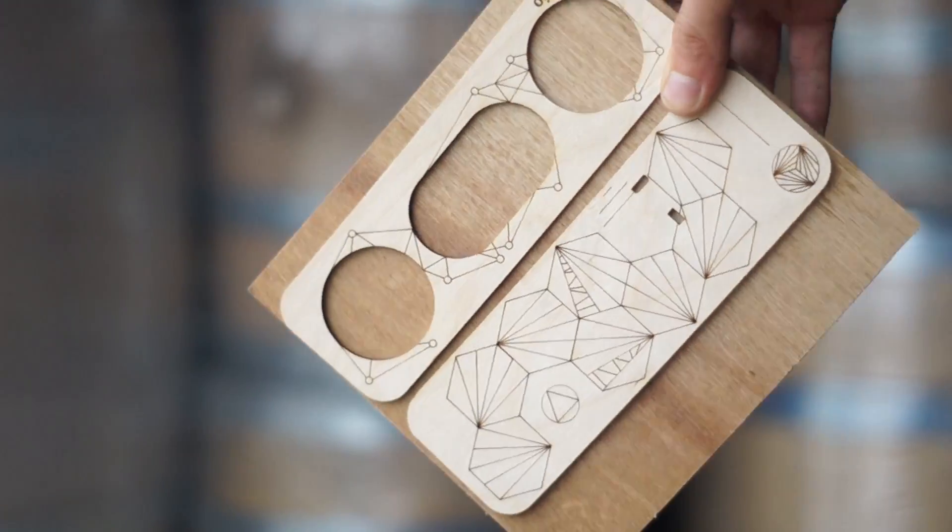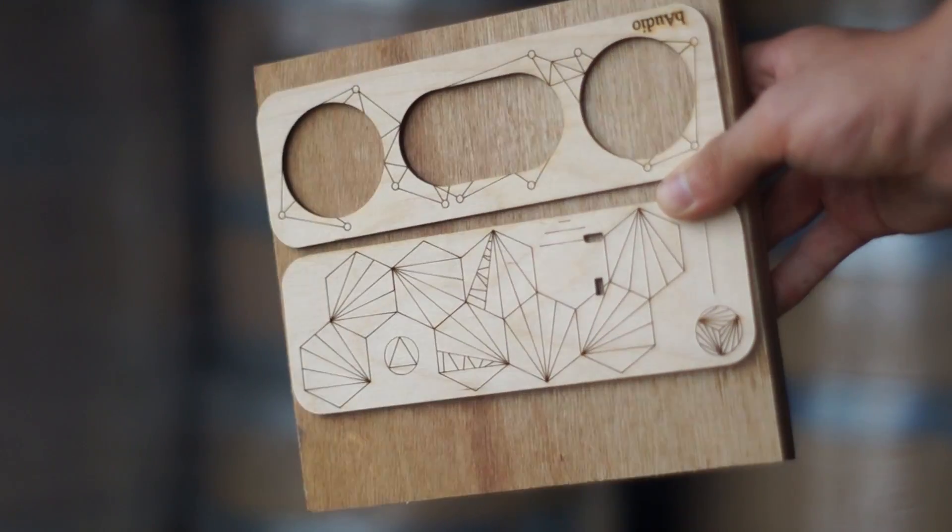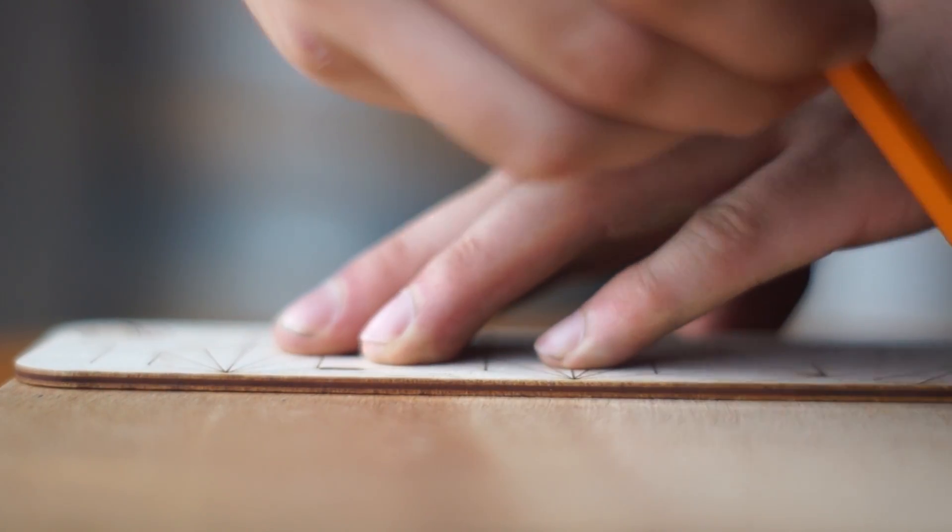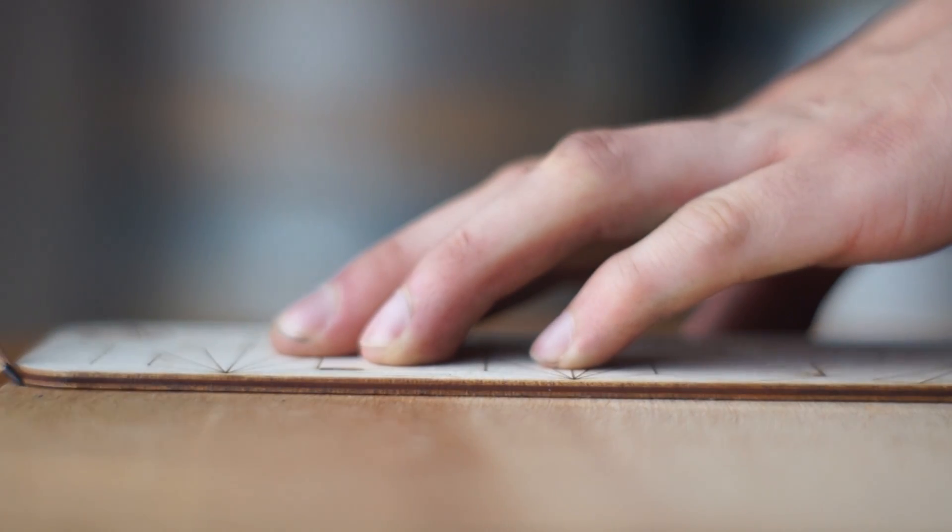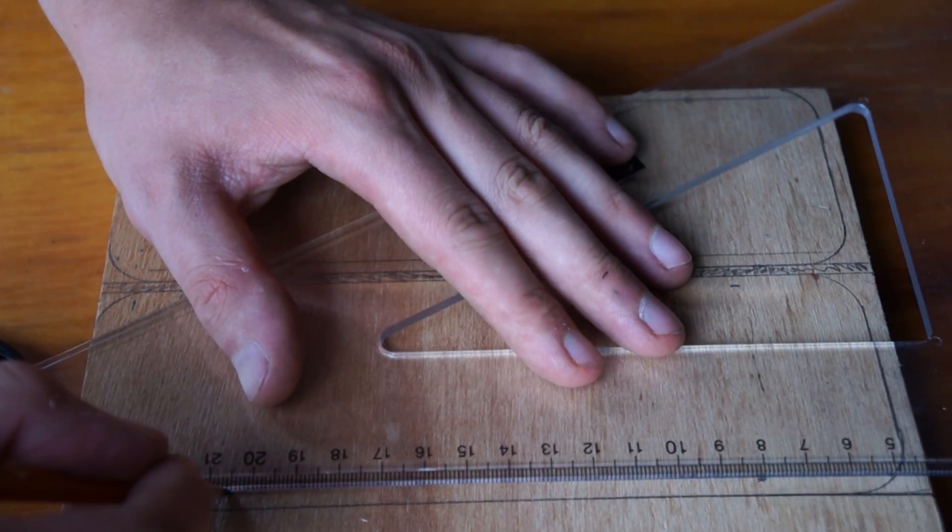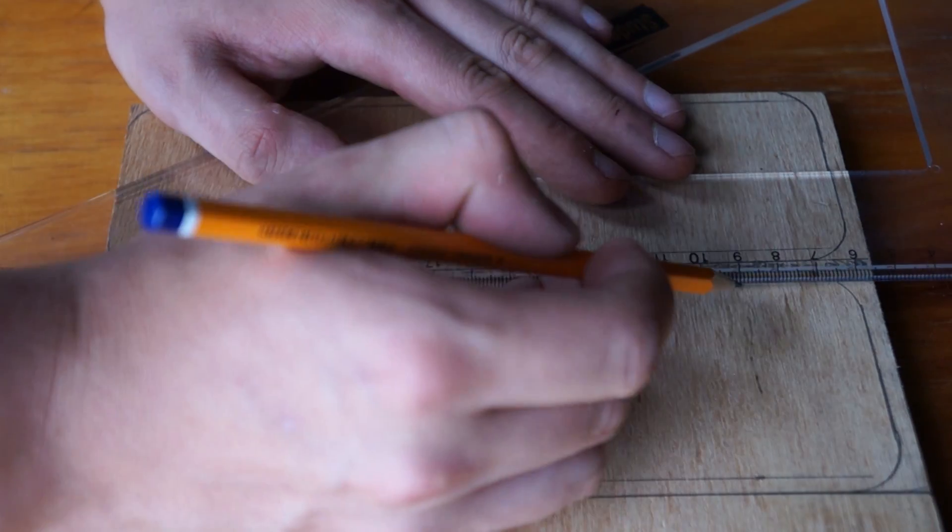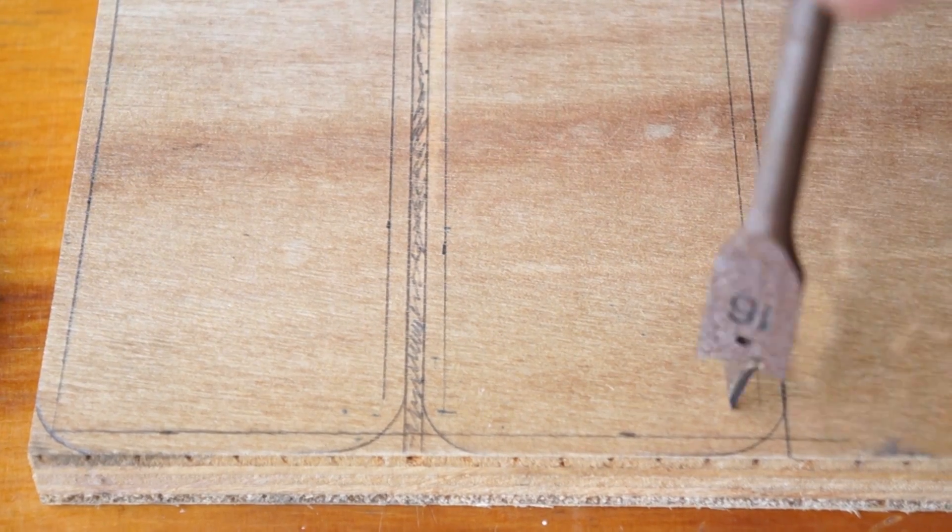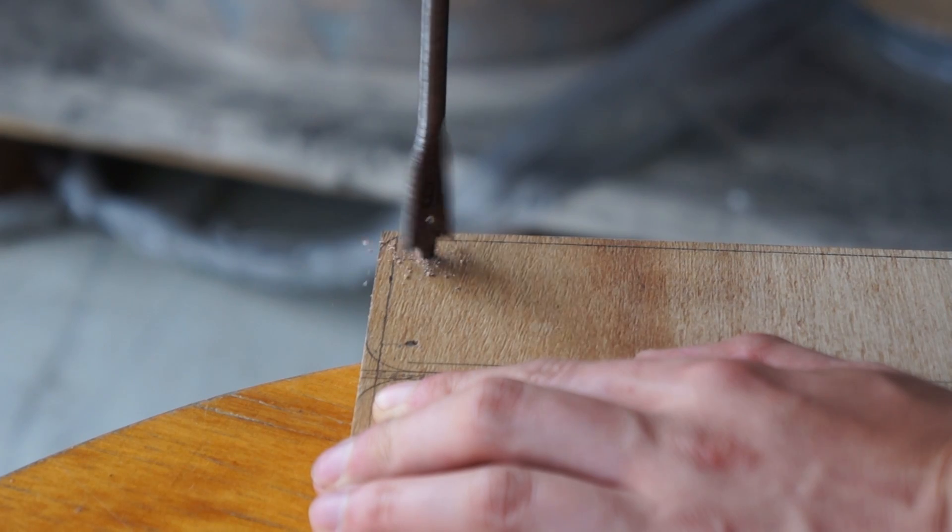So for making the actual enclosure, we're going to get a piece of 18mm plywood and we're going to trace around two shapes, and these are going to be the shapes of the two panels. Then we're going to get a ruler and mark out five millimeters on the inside of each of them.